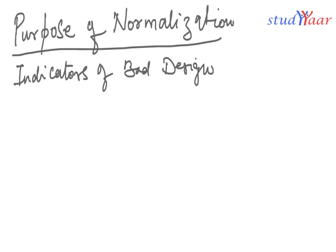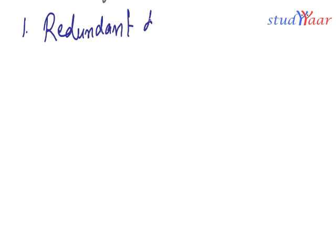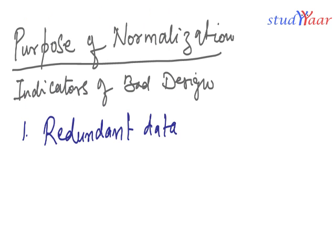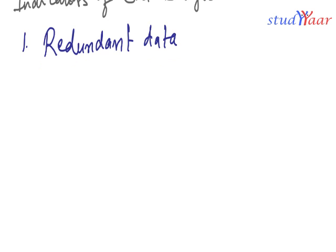We will look at them one by one. The first indicator is redundant data. The indicator of bad design is redundant data, and the purpose of normalization is to eliminate redundant data. So what is redundant data?